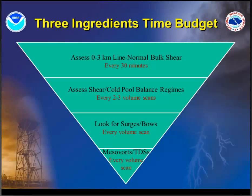Additionally, every volume scan, look for mesovortices and TDSs. If you've got mesovortices present, track where they're going — they stay in your updraft-downdraft convergent zone, but some will tend to migrate north, especially in slightly shear dominant portions of the line. TDSs — cannot emphasize enough, be looking for TDSs at all times. There are a couple of slides built into this presentation on this. We'll talk about a couple of different ways to monitor for them.